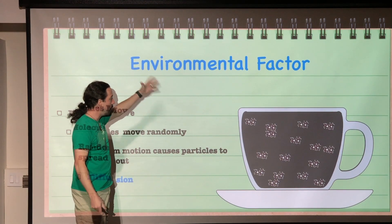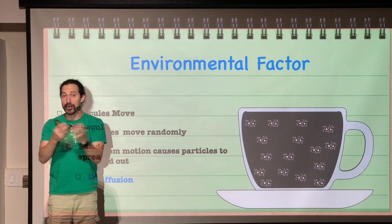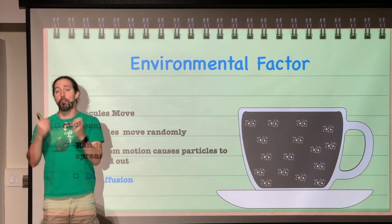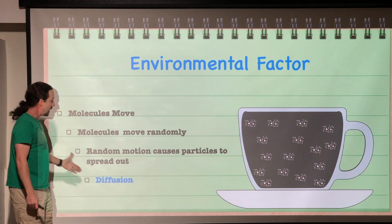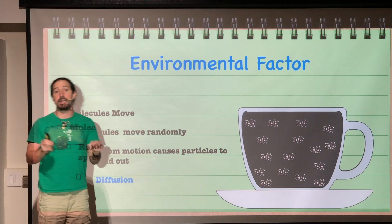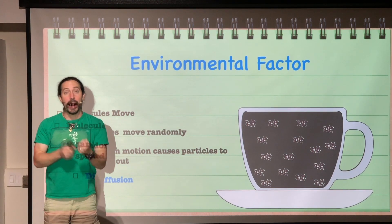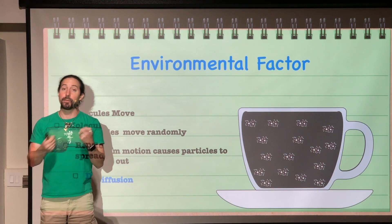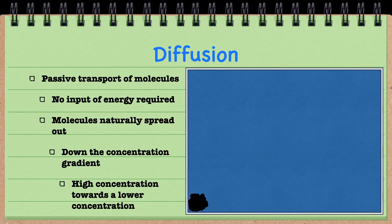Over time, the molecules continue to move but stay approximately the same distance from each other — the same concentration throughout. Our molecules spread through this random motion, and that is called diffusion. So, what is diffusion?